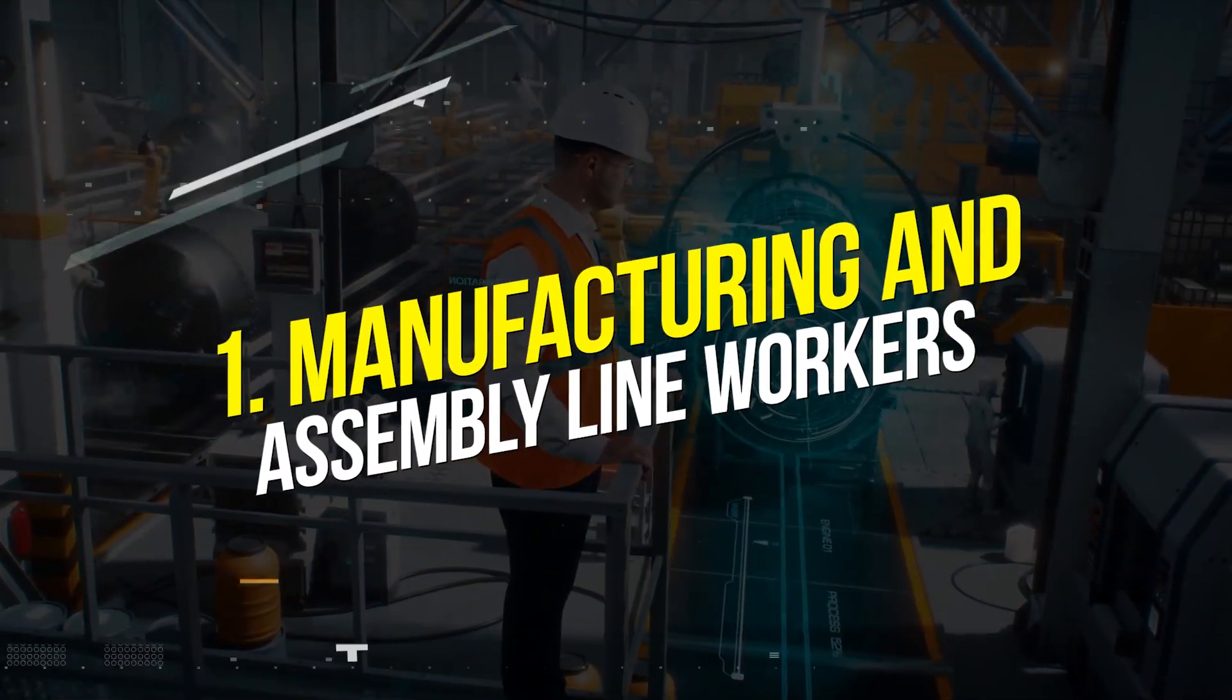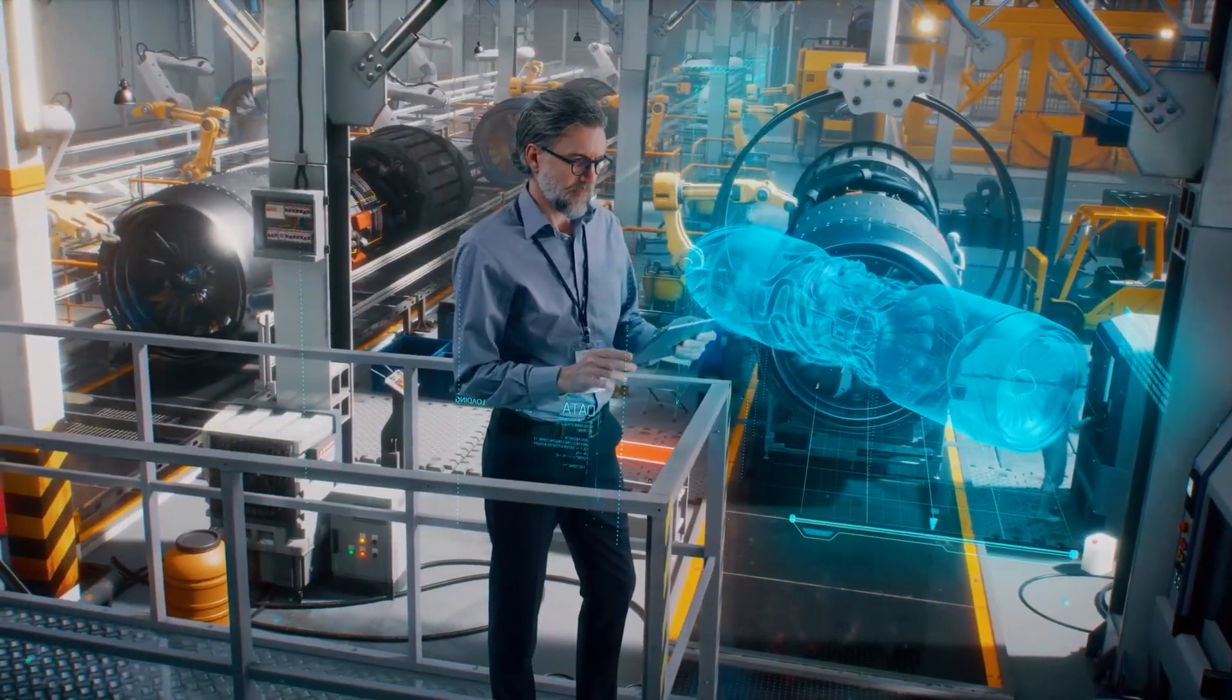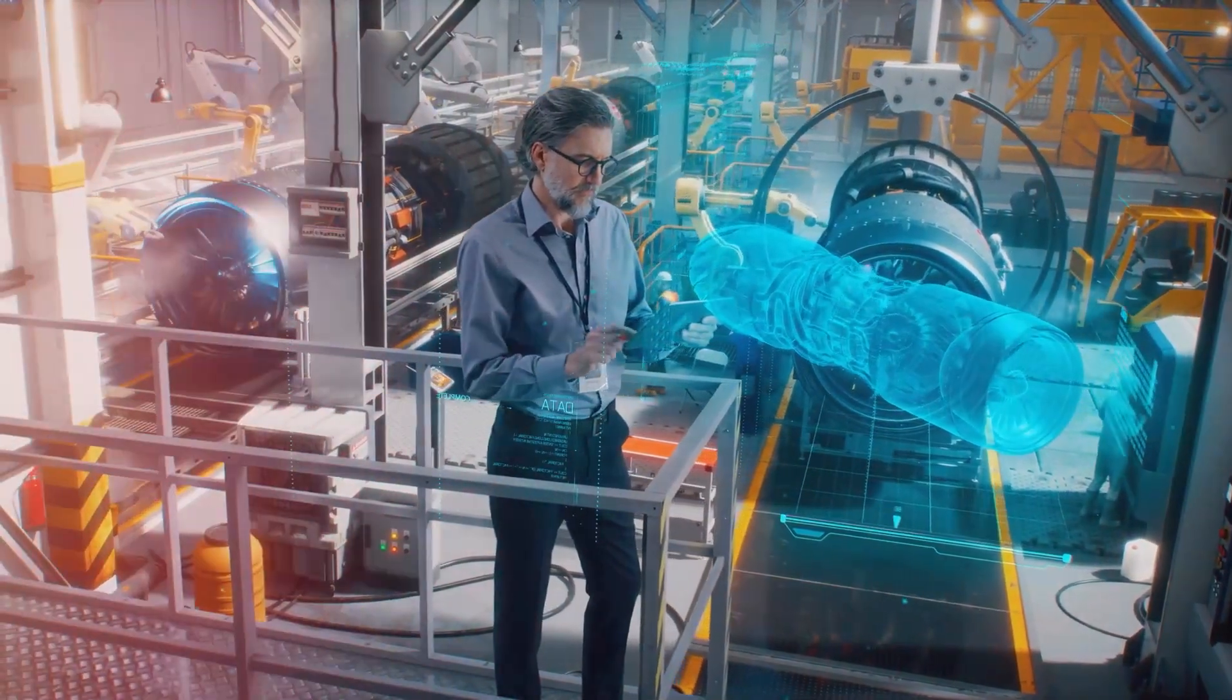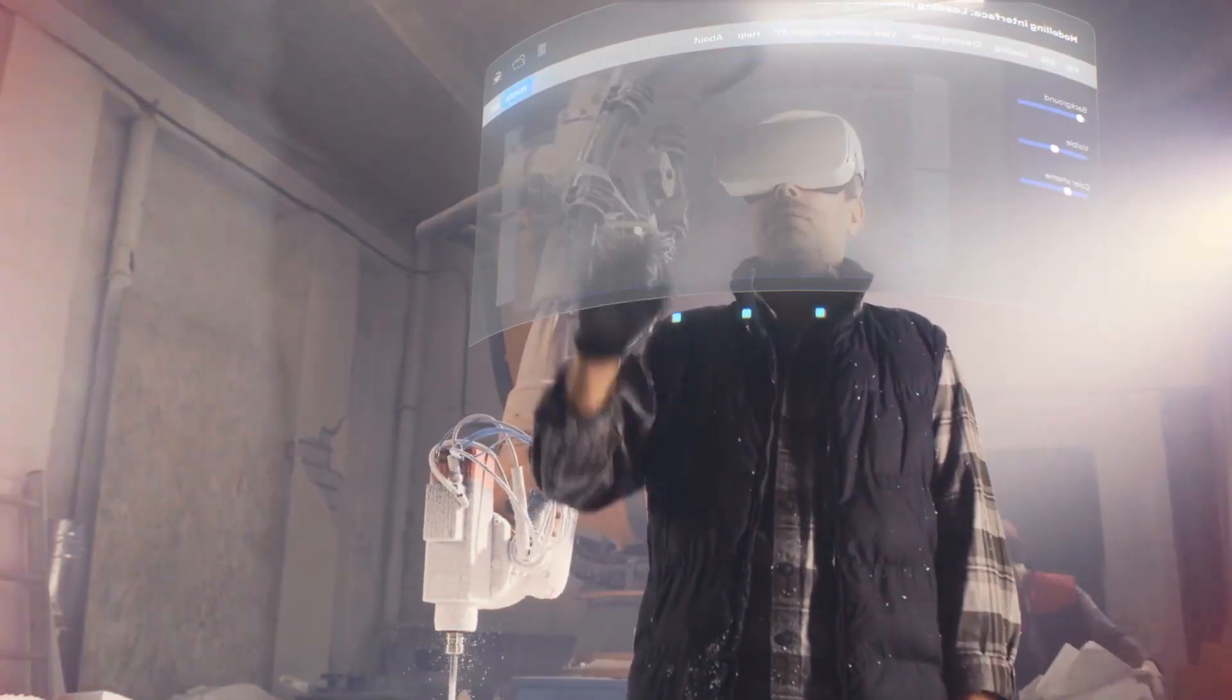1. Manufacturing and assembly line workers. Automation has already begun to replace human workers in factories and assembly lines. As AI technology continues to improve, we can expect more jobs in this sector to be at risk.